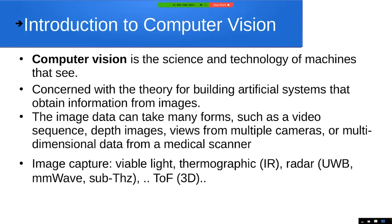We've got all kinds of image capture: visible light, thermographic infrared sensors — maybe you've played with FLIR cameras before. Then there's radar, ultra-wideband, MM-waves, sub-terahertz. Terahertz radar is pretty new and already bringing radar into the spectrum of optical light. Time-of-flight sensors for 3D — that's what you're getting in all your new cell phones.